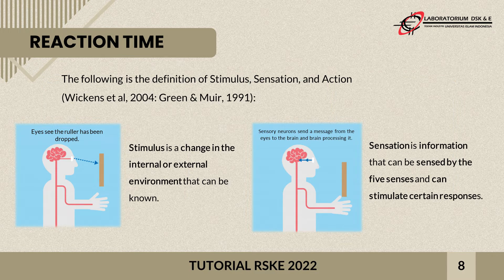A stimulus is everything that happens in the environment around us. It can be in the form of visual, audio, smell, and movement stimuli. The stimulus is captured by the five senses: eyes for sight, ears for hearing, nose for smell, tongue for taste, and skin for touch.